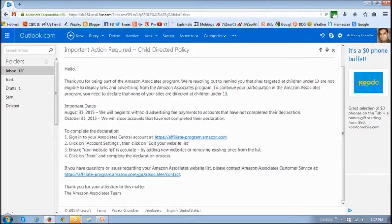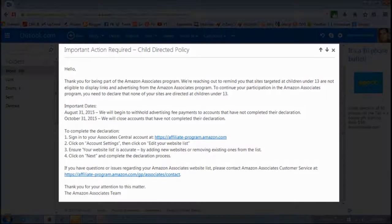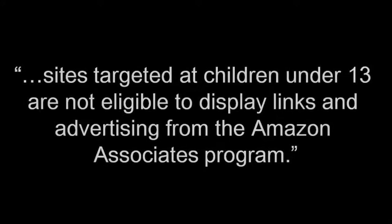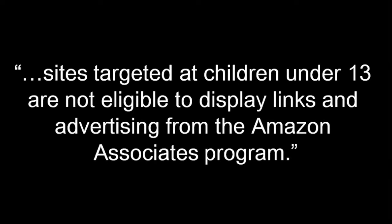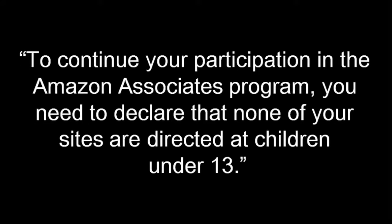I'm not sure if you've received this email from Amazon, however, based on my communication with Amazon, I've been told that this notice has gone out to all US site Amazon Associates. Now, the crux of this message is that sites targeted at children under 13 are not eligible to display links in advertising from the Amazon Associates program. And it goes on to say that to continue your participation in the Amazon Associates program, you need to declare that none of your sites are directed at children under 13.